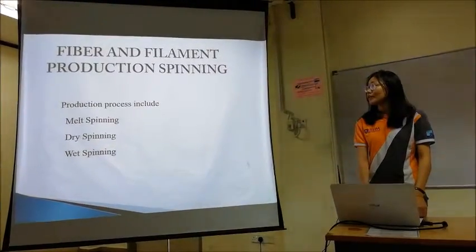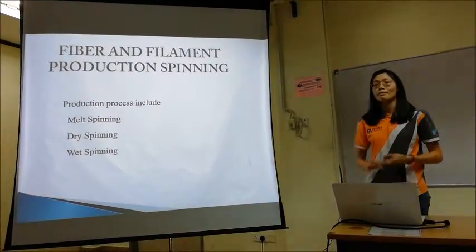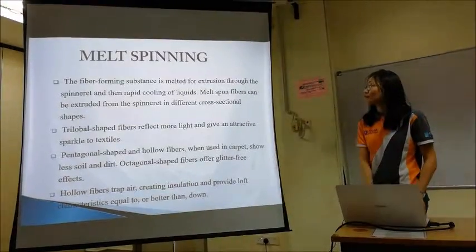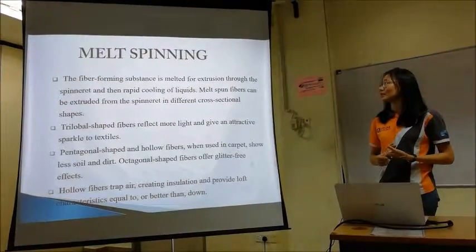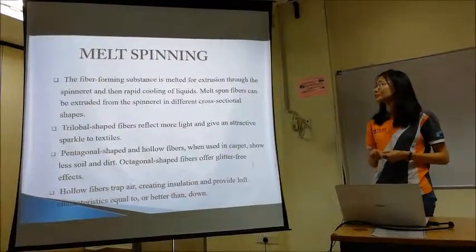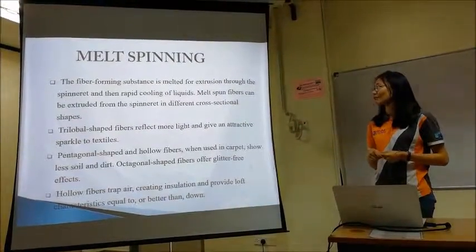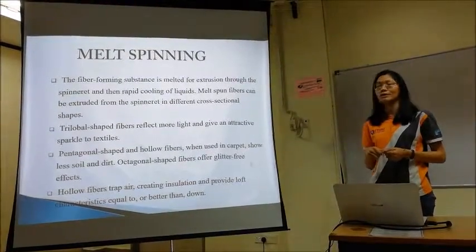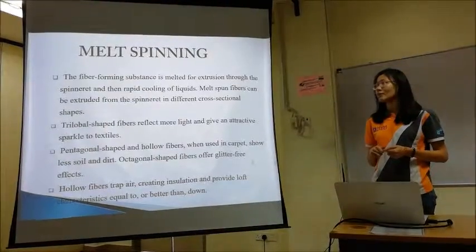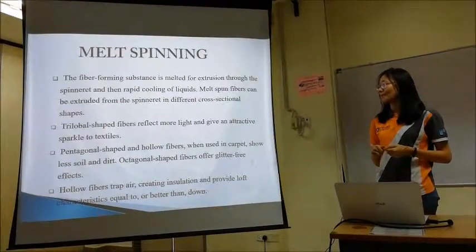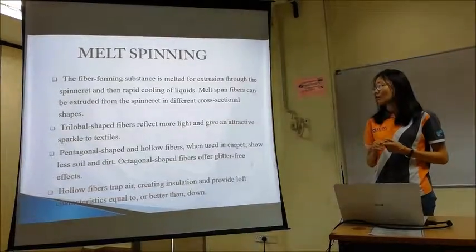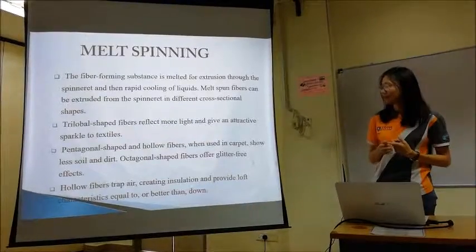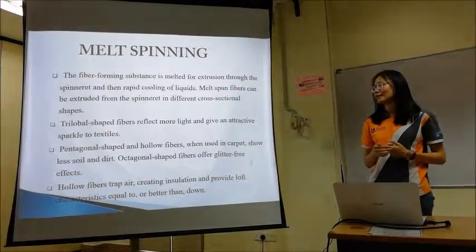There are three types of production processes: melt spinning, dry spinning, and wet spinning. For melt spinning, the fibre-forming substance is extruded through the spinneret and then rapidly cooled into a solid filament. The dark spun fibre can be extruded from the spinneret in different cross-sectional shapes, for example trilobal shape, pentagonal shape, and hollow fibre which traps air, granting insulation and providing warmth characteristics equal to or better than down.